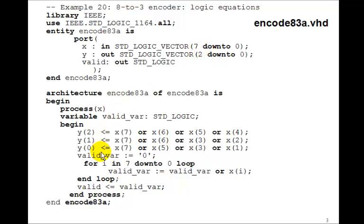So we can do this by making a for loop: for i in 7 downto 0 loop, valid variable equals valid variable ORed with x(i). So the first time through the loop, we'll OR it with, in this case, x7, then x6, x5, all the way down to x0. If any of them are 1, then valid variable would be 1.